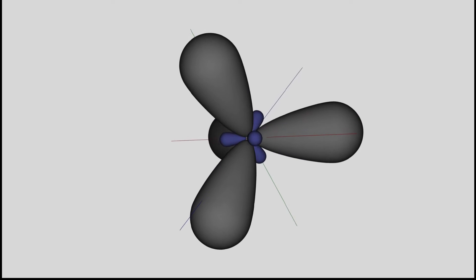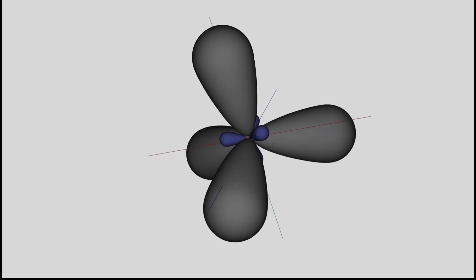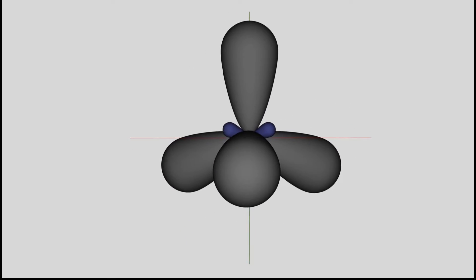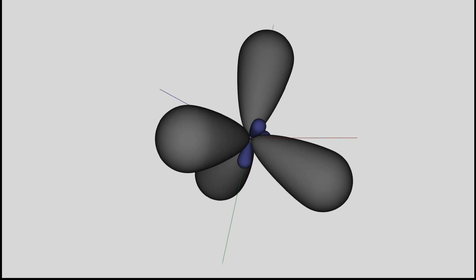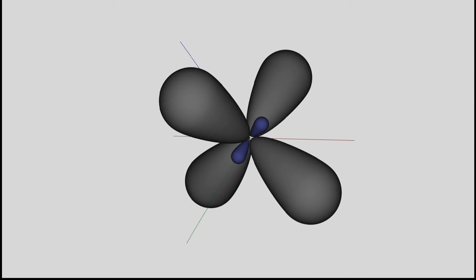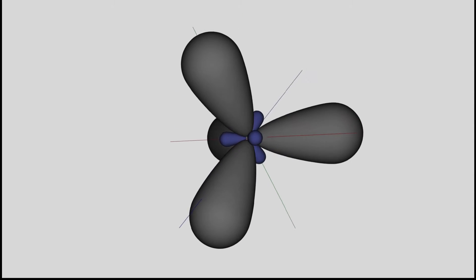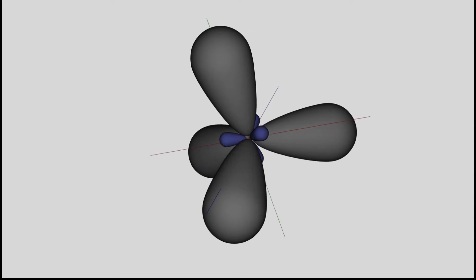The formation of those mixed orbitals is called orbital hybridization, in the special case sp3 hybridization, because one s and three p orbitals are involved.